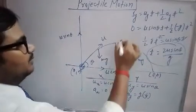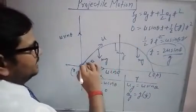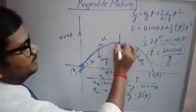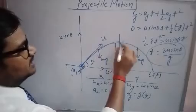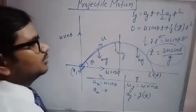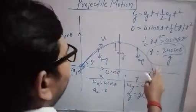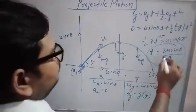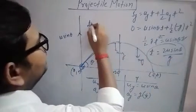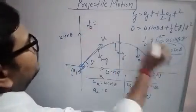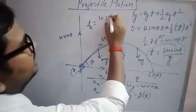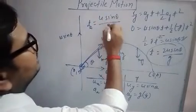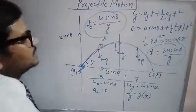The time of ascent is the time during which the object is ascending, and the time of descent is the time during which the object is falling down. The time of ascent is half of the total time of flight, which is u sin theta / g.